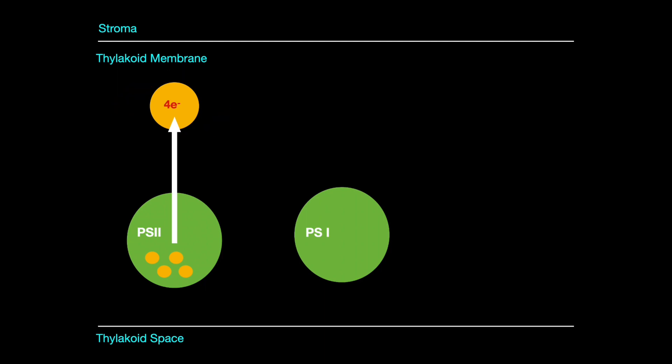The light is also used to split water, a reactant in photosynthesis, into oxygen, hydrogen ions and electrons. This process is called photolysis. The electrons from photolysis are supplied to the chlorophyll to replace those that were lost.